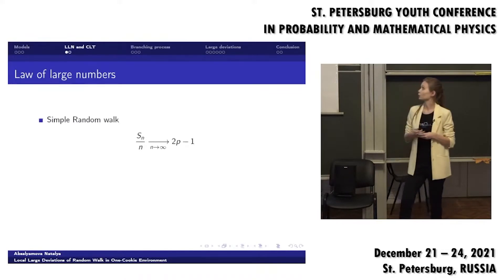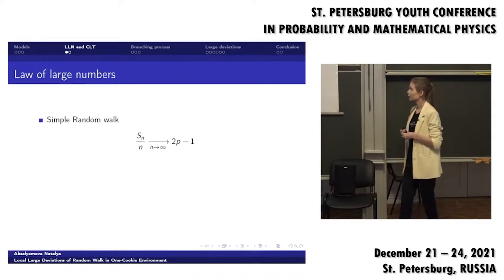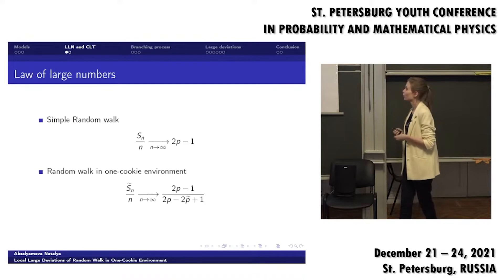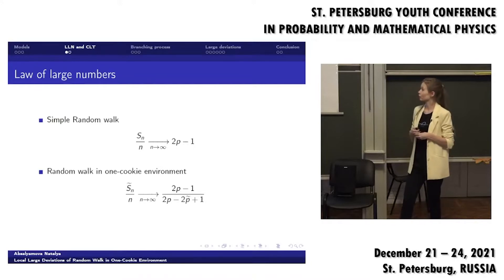Now I'd like to introduce you to some classic results such as law of large numbers. For simple random walk it is written there. For random walk in one-cookie environment we can see that the mathematical expectation changed a little bit. But it must be mentioned that when our random walk is symmetrical, so p is equal to one half, then nothing changes when we add one cookie. Both of these equations tend to zero when n tends to infinity.